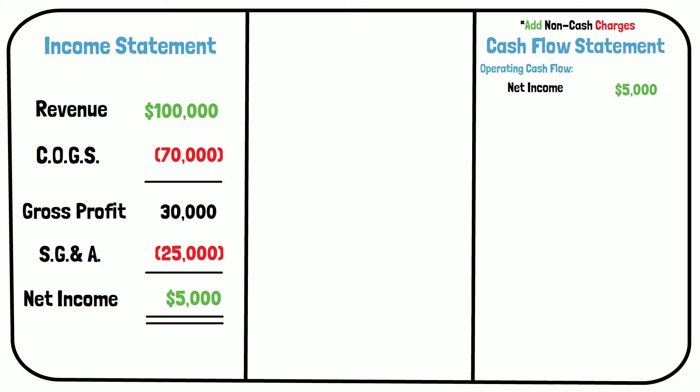The cost of goods sold on the income statement includes depreciation and amortization expenses, which are considered non-cash charges. For Tim's Cars, out of the $70,000 in cost of goods sold, 20% is from depreciation and amortization. So, 20% of $70,000 is $14,000. This $14,000 is added to the profit of $5,000, which gives us $19,000.